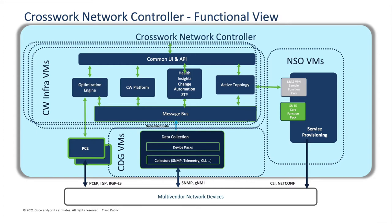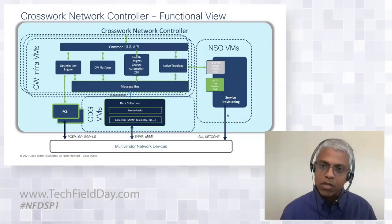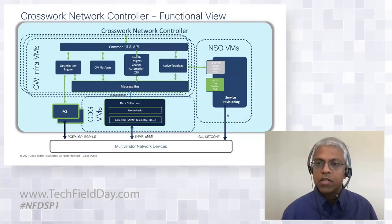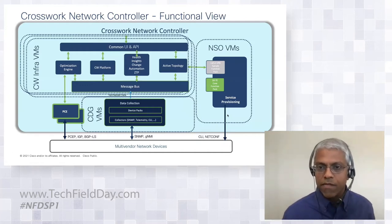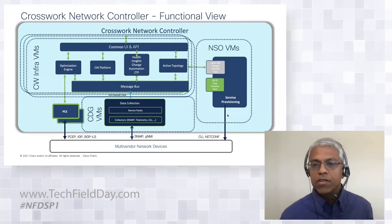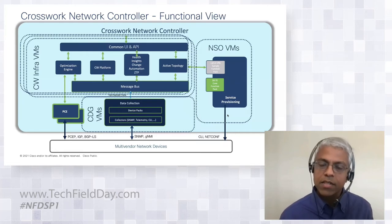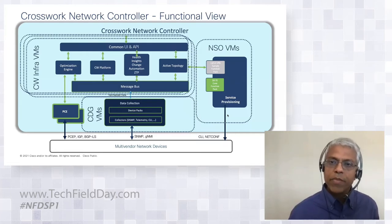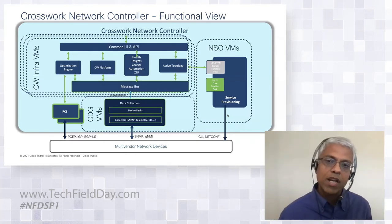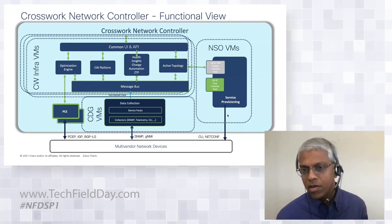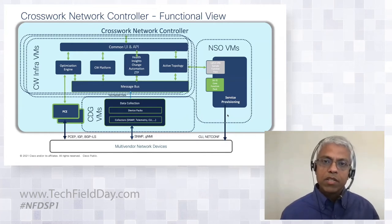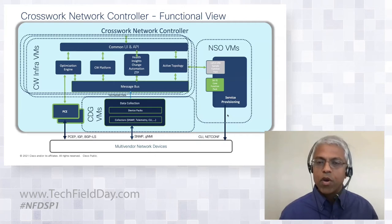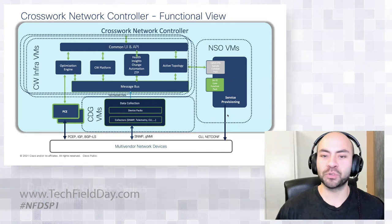NSO is a model-based provisioning engine with YANG northbound models for L2/L3 VPNs. When you buy CNC, you get the NSO platform plus what we call function packs — the software artifacts needed to provision SR-TE. Out of the box you can provision SR MPLS, SRv6, ODN on-demand next-hop templates, and L2/L3 sample function packs providing reference VPN implementations bound to SR-TE and RSVP-TE. The idea is to simplify adoption and introduce automation in a turnkey manner.